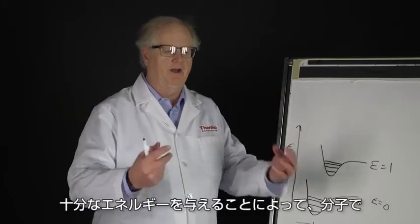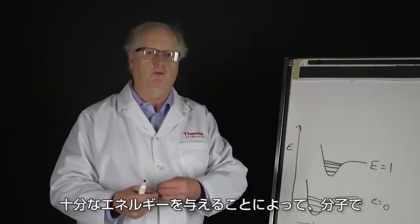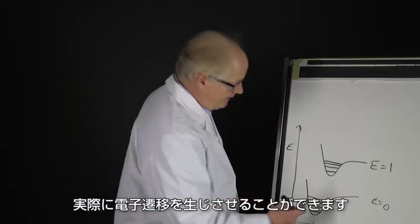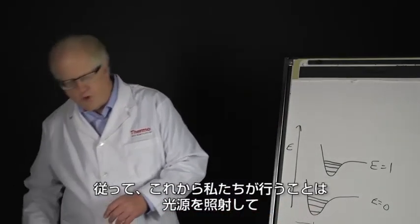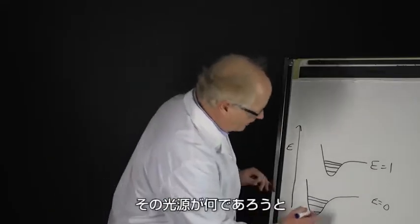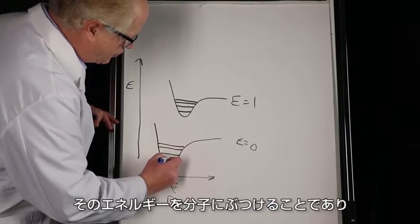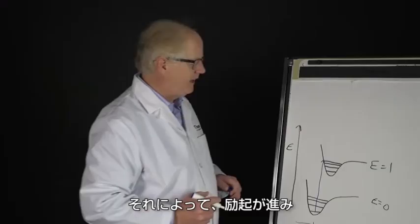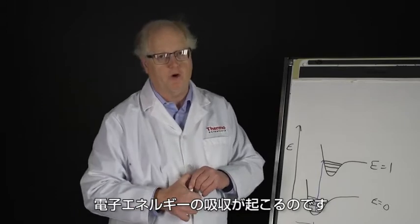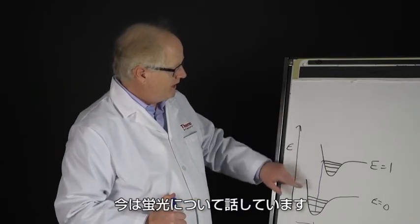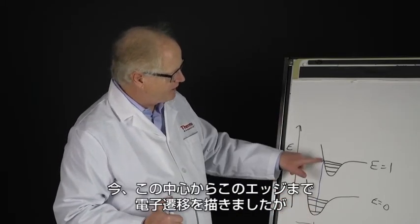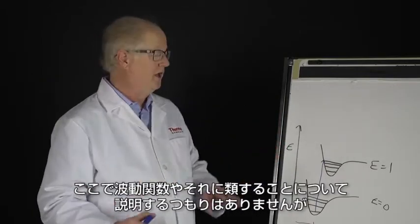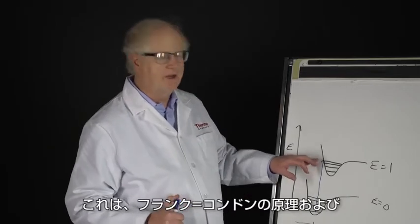An electronic excitation is something UV-Vis does all the time — you're putting in enough energy to cause the molecule to actually undergo an electronic transition. So now what we're going to do is take our source, whatever it may be, and strike the molecule with energy, causing an absorption of electronic energy. Remember, we're talking about fluorescence here. I've drawn it from the center of this to the edge of this, and there's a good reason for that.